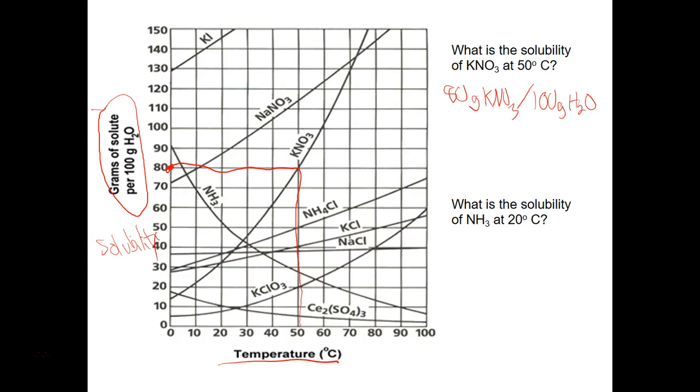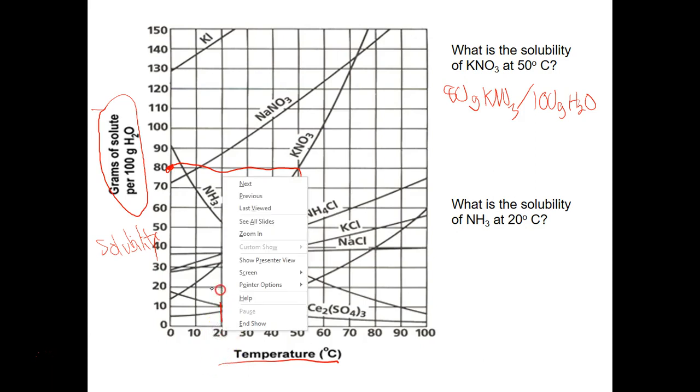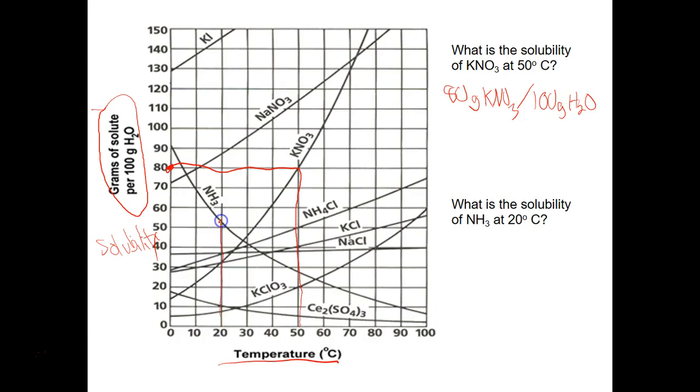What is the solubility of NH3 at 20 degrees Celsius? We're going to go down our line, find 20 degrees. We're going to find where it meets NH3. And if we notice right here it's just under the halfway point. So it's not quite 55. We need to make sure we estimate that accordingly. So we could say something like 52, 53, anywhere in that nature. And we'll say about 53 grams of NH3 per 100 grams of H2O. And again that means at 20 degrees the most we can dissolve is 53 grams of NH3.